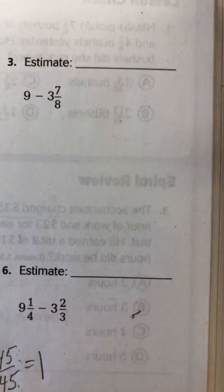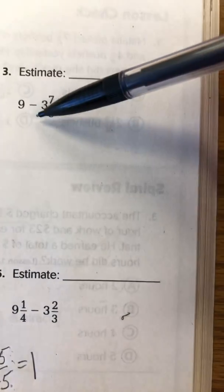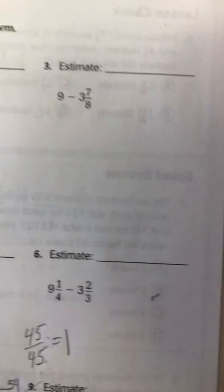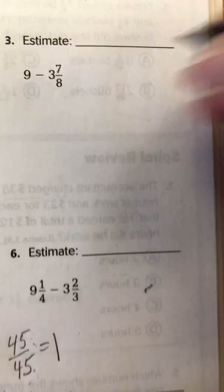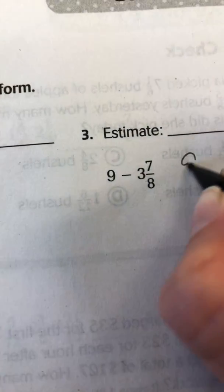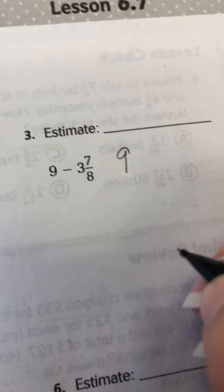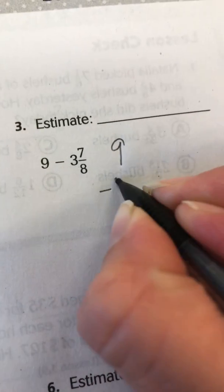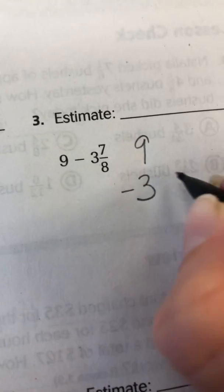I'm looking at number 3 right here. This one starts with a whole number. So it's a whole number minus a mixed number. So here's how we do it. So just like before, you want to start with rewriting it and making sure you're lining up the whole numbers. So 9 minus 3 and 7/8.